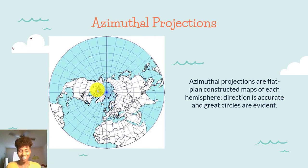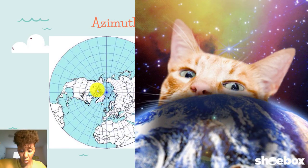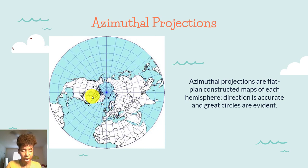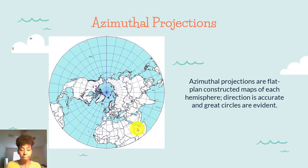Azimuthal projections are flat-plane constructed maps of the hemisphere. Think of yourself out in space looking down on the North Pole — that's basically what it is. These circles are the great circles; if you remember the Tropic of Cancer and the Tropic of Capricorn, those lines of latitude are your circles here, and the outer circle is the equator. The directions here are accurate — we can see north, south, east, and west — but since it's flat, a lot of the shapes and landforms are going to be distorted.